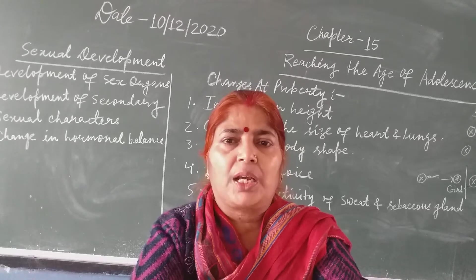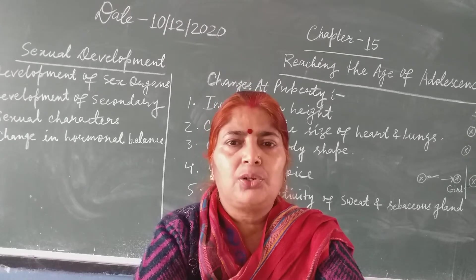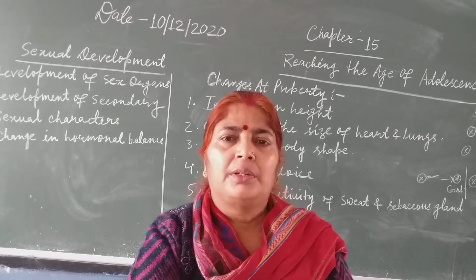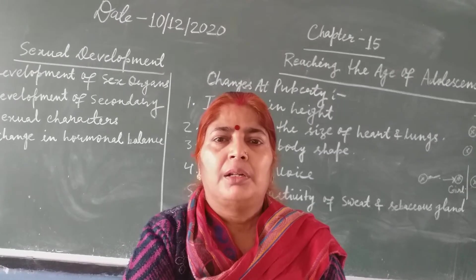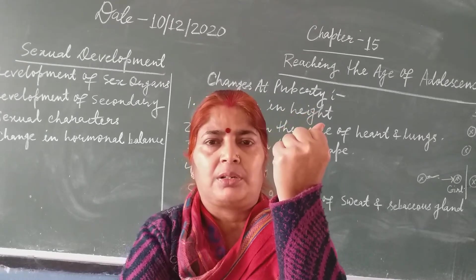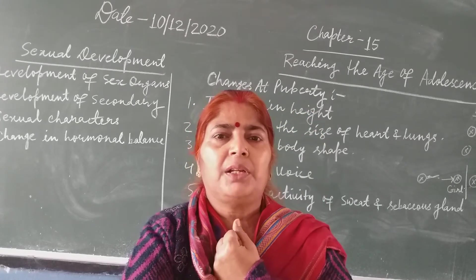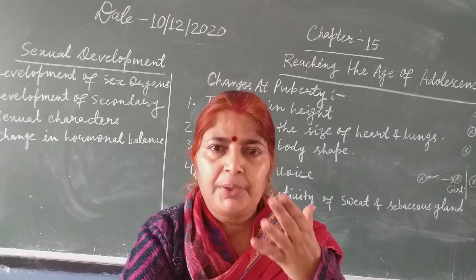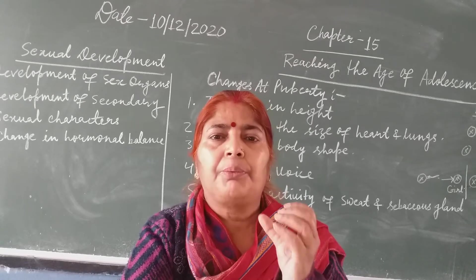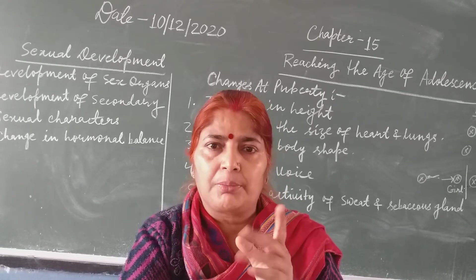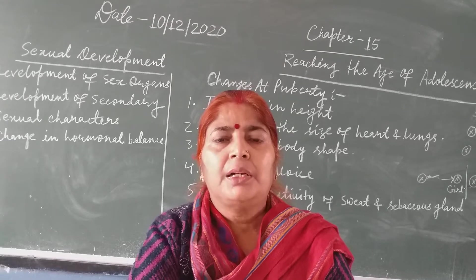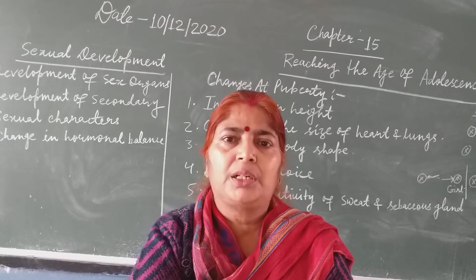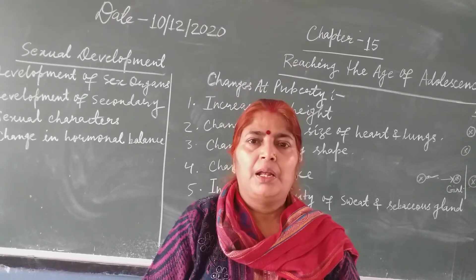The next change that takes place during puberty is a change in the size of the heart and lungs. The shape of the heart is like our fist and it is present in the chest cavity. The diameter of the heart increases by 50% and the weight of the heart also becomes double during puberty. The size and capacity of the lungs also increases during the age of puberty.